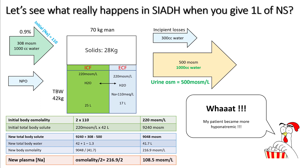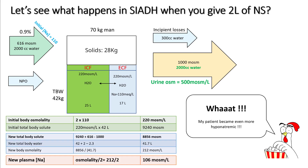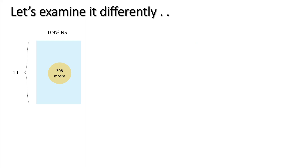Giving more saline makes it worse. If you give two litres of normal saline and the patient urinated two litres, the sodium drops further to 106 mEq/L. Let's look at this differently to understand what is happening.